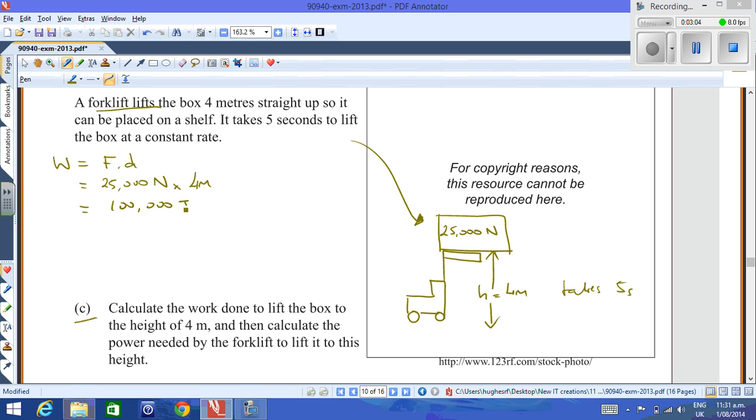Work is measured in joules as well, so it's a form of energy. The next part is to work out the power, where power equals work over time, which is equal to 100,000 joules divided by the time it took to do that work, which was five seconds, and that gives you a power output of 20,000 watts. So the work done is 100,000 joules and the power is 20,000 watts.